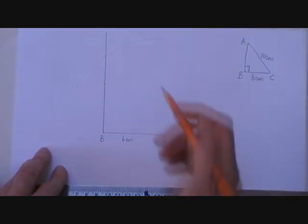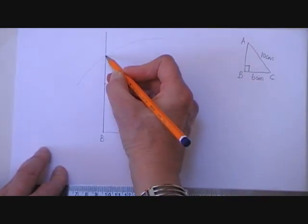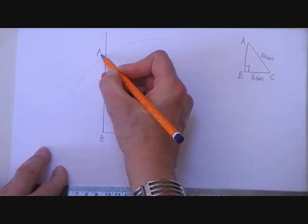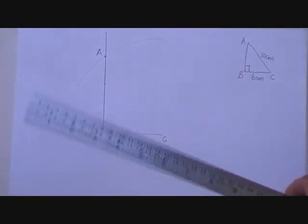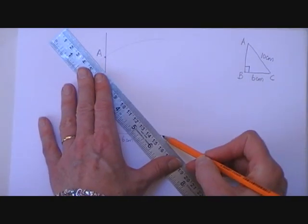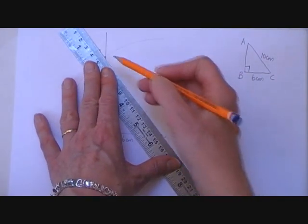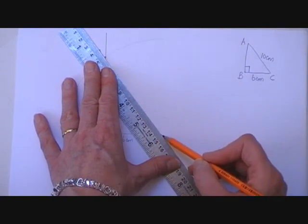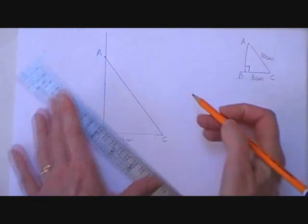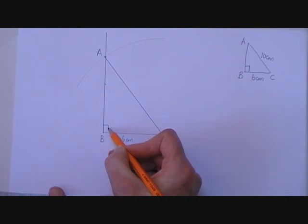Where the arc cuts the line, I call that the point A. And now I'm going to join A to C and that gives me the hypotenuse of my right angle triangle and that's my right angle drawn.